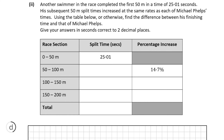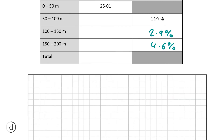Moving on to part ii: another swimmer in the race completed the first 50 meters in a time of 25.01 seconds, and the subsequent 50 meter split times increased at the same rates as each of Michael Phelps' times. Using the table, find the difference between his finishing time and that of Michael Phelps. As his percentage increase in times were the same as Michael Phelps, we can fill in the percentage increases we found in the previous part. Now we must find out how long it took him to swim the second split.